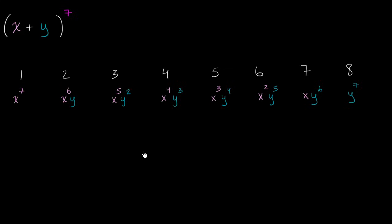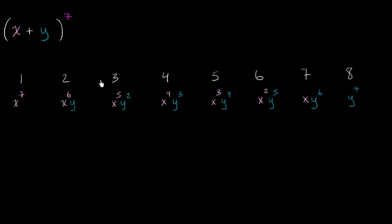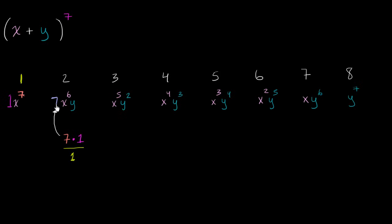Now let's calculate the coefficients. The algorithm is: for each term, the coefficient is the x-exponent of the previous term, times the coefficient of the previous term, divided by which term that was. We know the first coefficient is one. So the second term's coefficient is the exponent seven, times the coefficient one, divided by one — which equals seven.